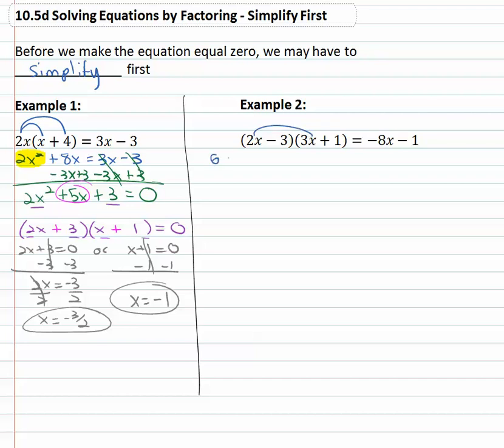So let's multiply this out, 2x times 3x is 6x squared, let me move that down a line, 6x squared, 2x times 1 is 2x, negative 9x and negative 3 equals negative 8x minus 1. We can combine some like terms there, so let's do that, 6x squared minus 7x, 2 minus 9 minus 3 equals negative 8x minus 1.